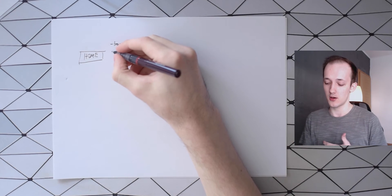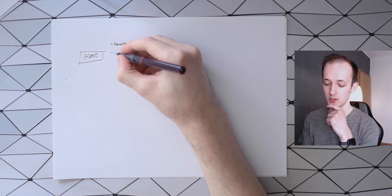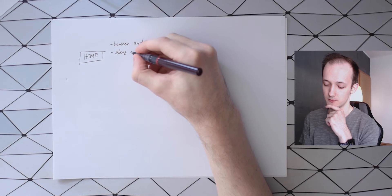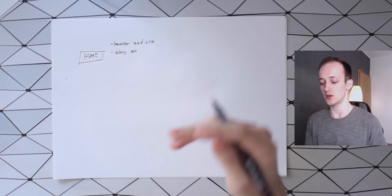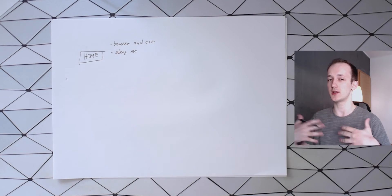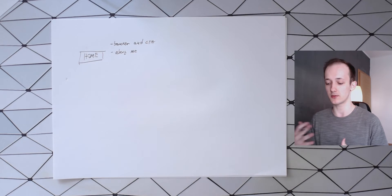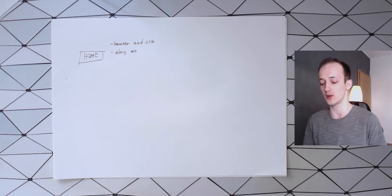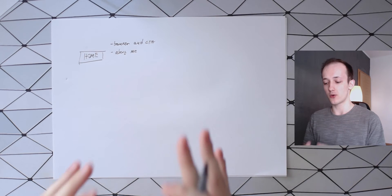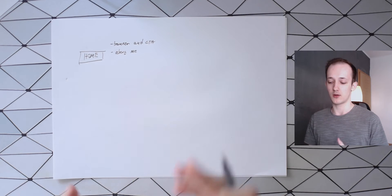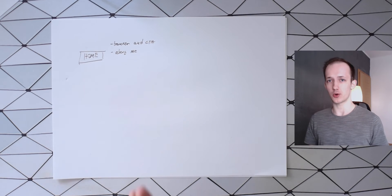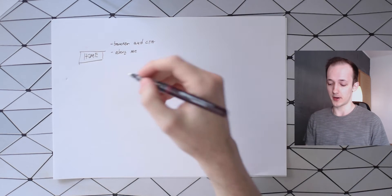After the banner, I want an about me section — not an in-depth one, just a short bio like you'd find on Twitter or YouTube. I want it to be about a paragraph max, maybe with a picture, though the picture will probably be on the banner already.